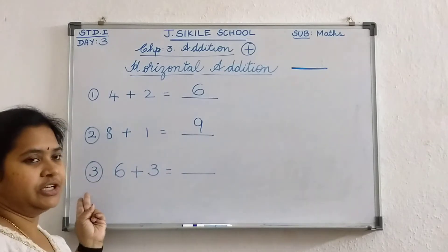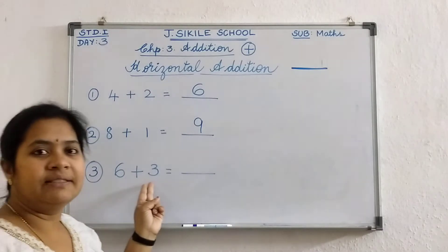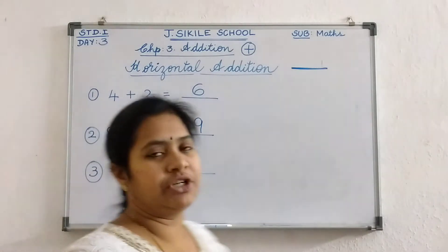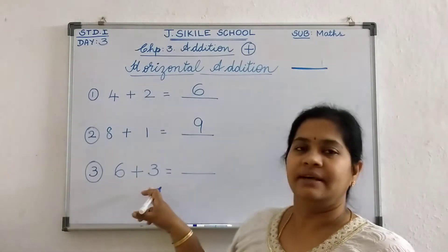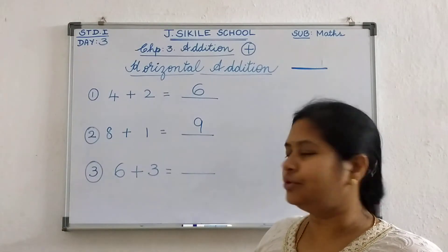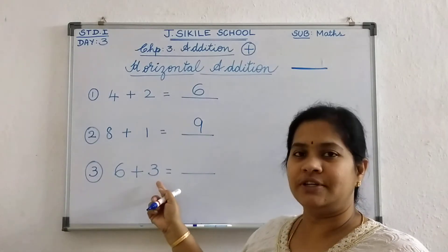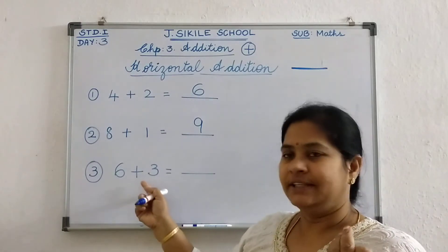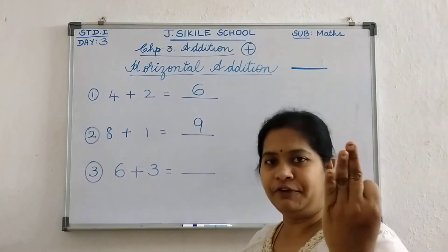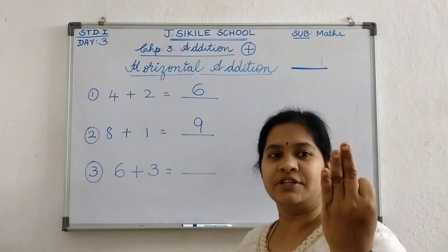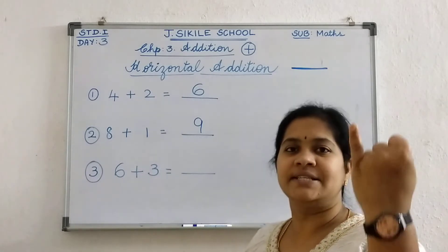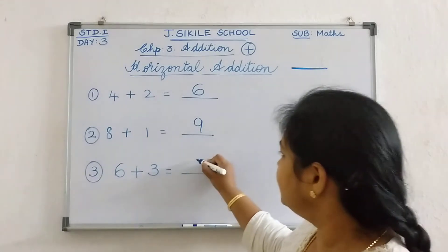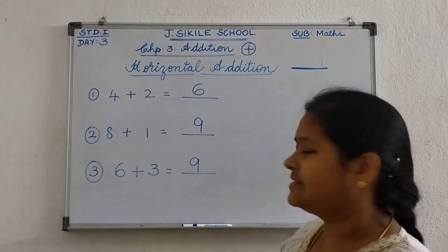Now the third question. 6 plus 3. What is the third question children? 6 plus 3. So first what do you have to do? Open the small number fingers. 6 or 3? 3. Very good. Take 3 fingers. Count 6 after. 7, 8, 9. So 9 is the answer.